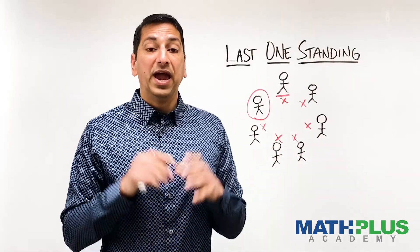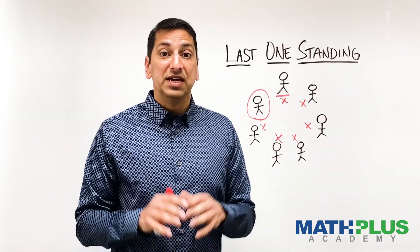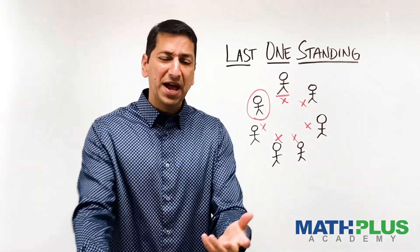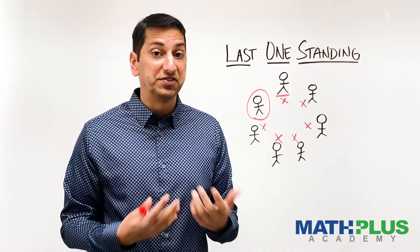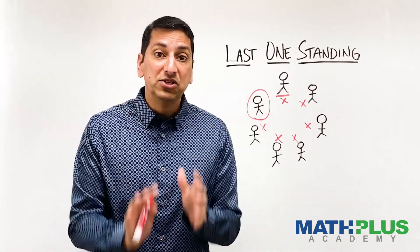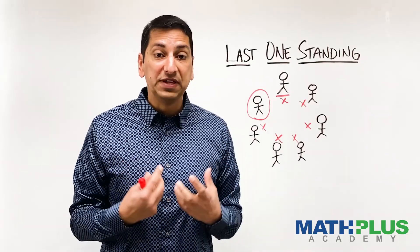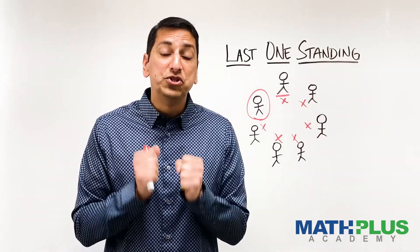You can imagine how it would work with different amounts of people. I want you to figure out for any number of people at the start of the game, let's say there are 17 people, where would you want to be so that you could win, be the last one standing?